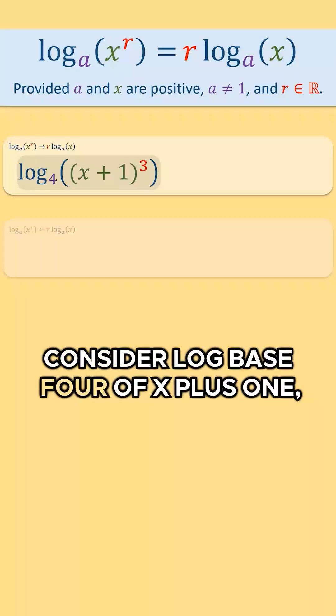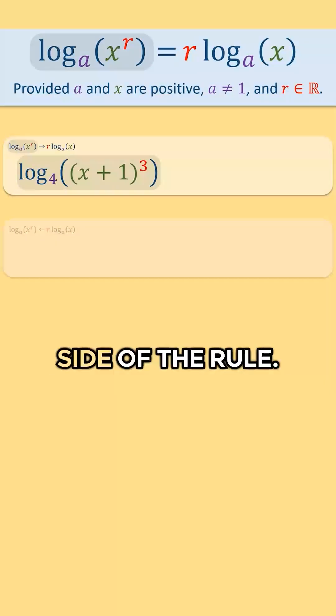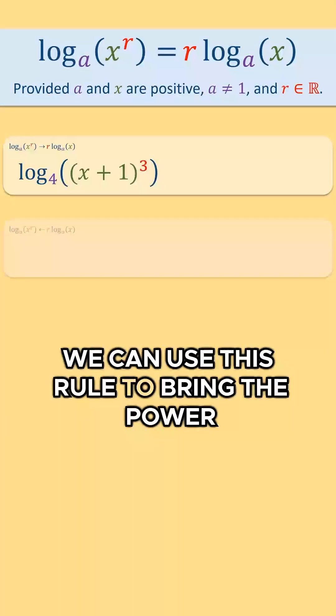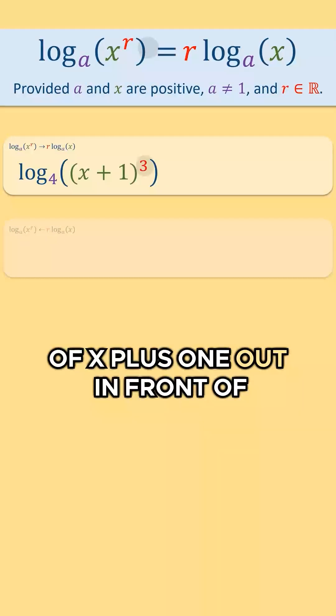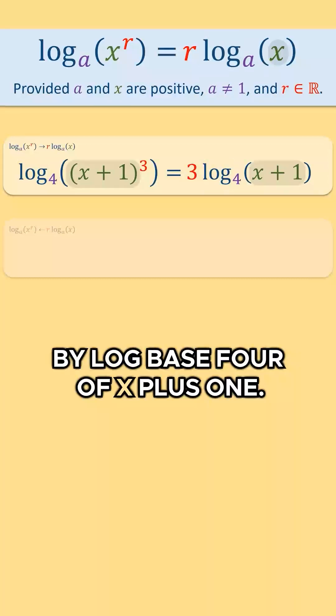Consider log base 4 of x plus 1 all raised to the third power. This currently matches the form on the left hand side of the rule. We can use this rule to bring the power of x plus 1 out in front of the logarithm, so we bring 3 outside and multiply it by log base 4 of x plus 1.